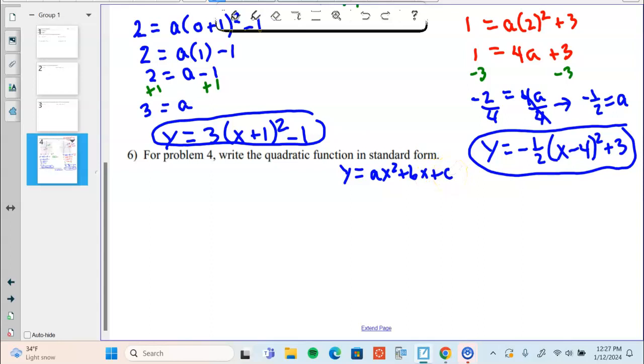Which means I need to take my answer from question four and multiply it out. So typically when you have a graph and you want to find the standard form, your first step is put it in vertex form and then multiply it out to get standard form.